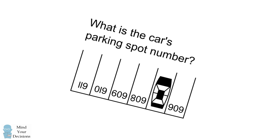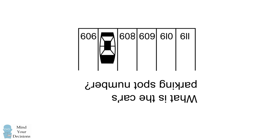This is the trick to solve the remaining puzzles. When we flip the diagram upside down, we see that the car in the second problem would have been parked in spot number 607.